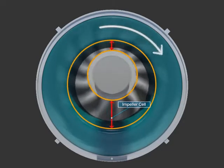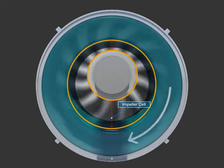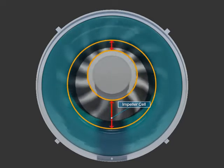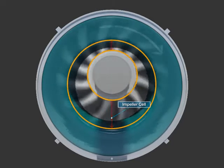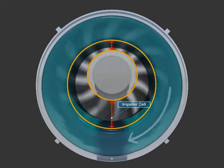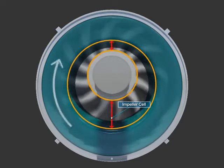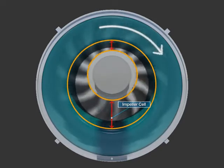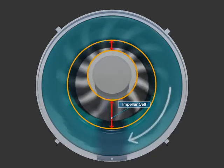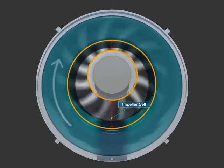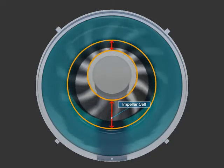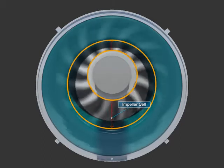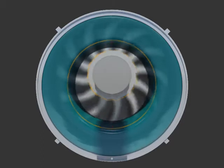The liquid ring, which is caused by the circulation of the impeller, causes capacity differentiation between the impeller and the inner wall because the impeller is located at the biased position inside the casing.